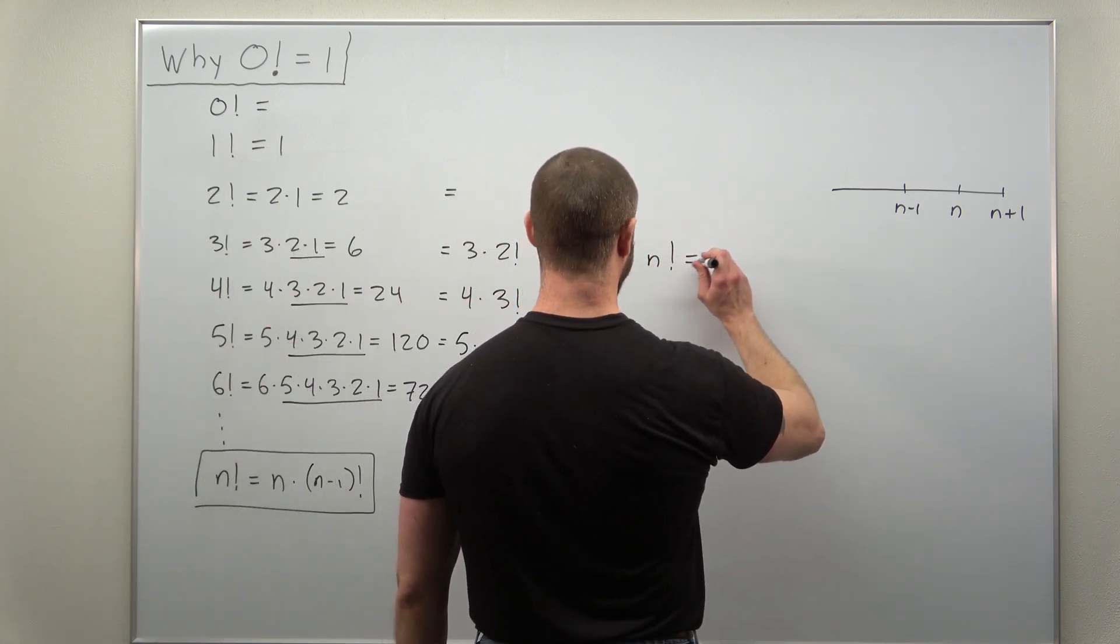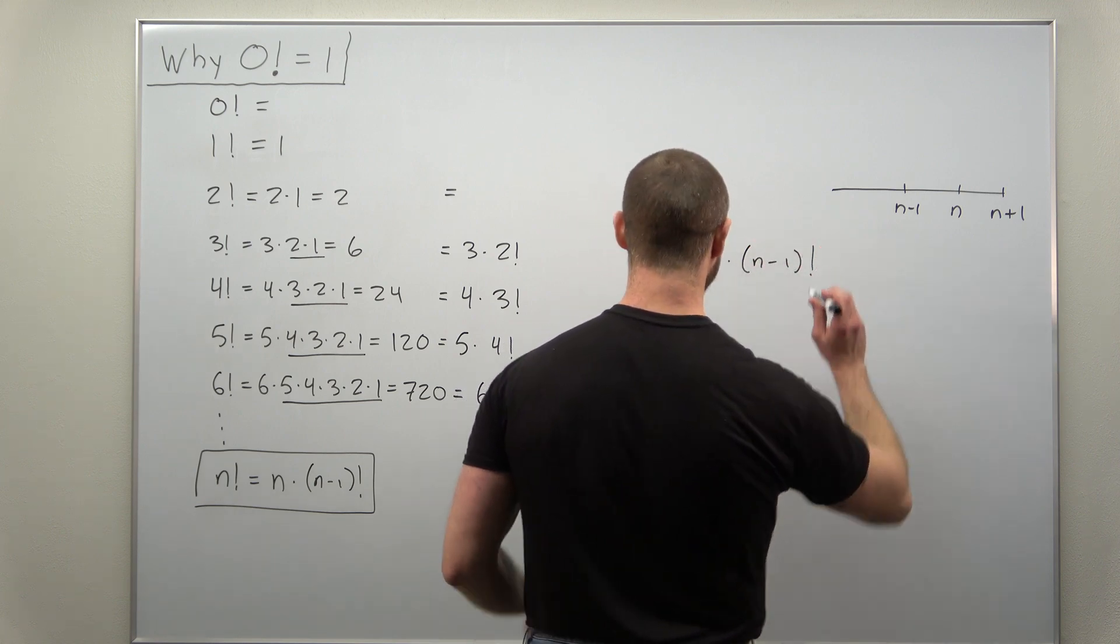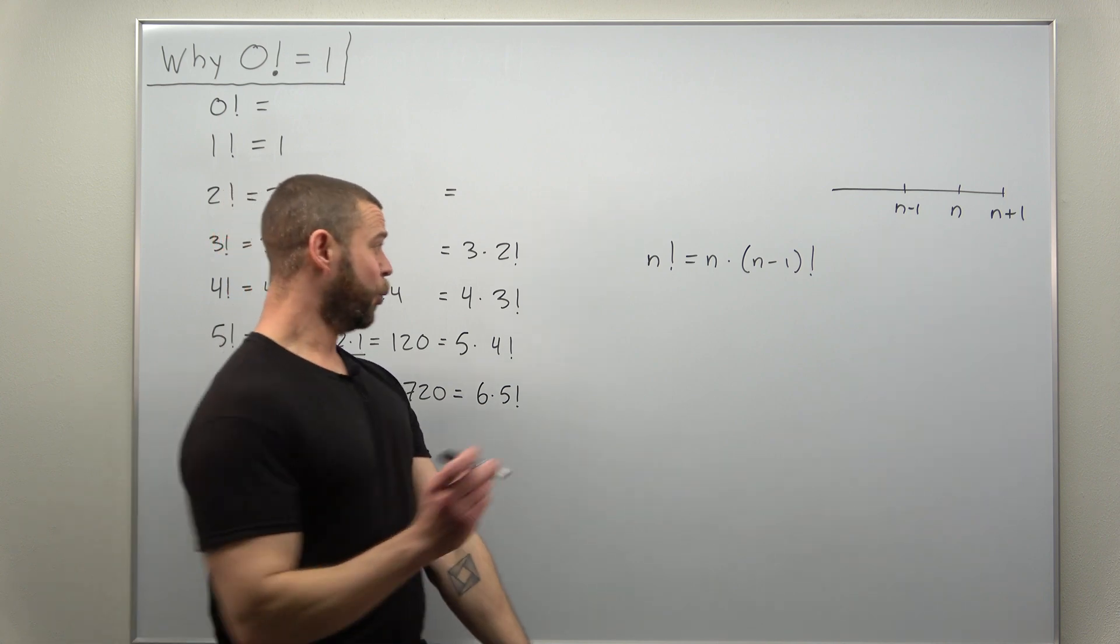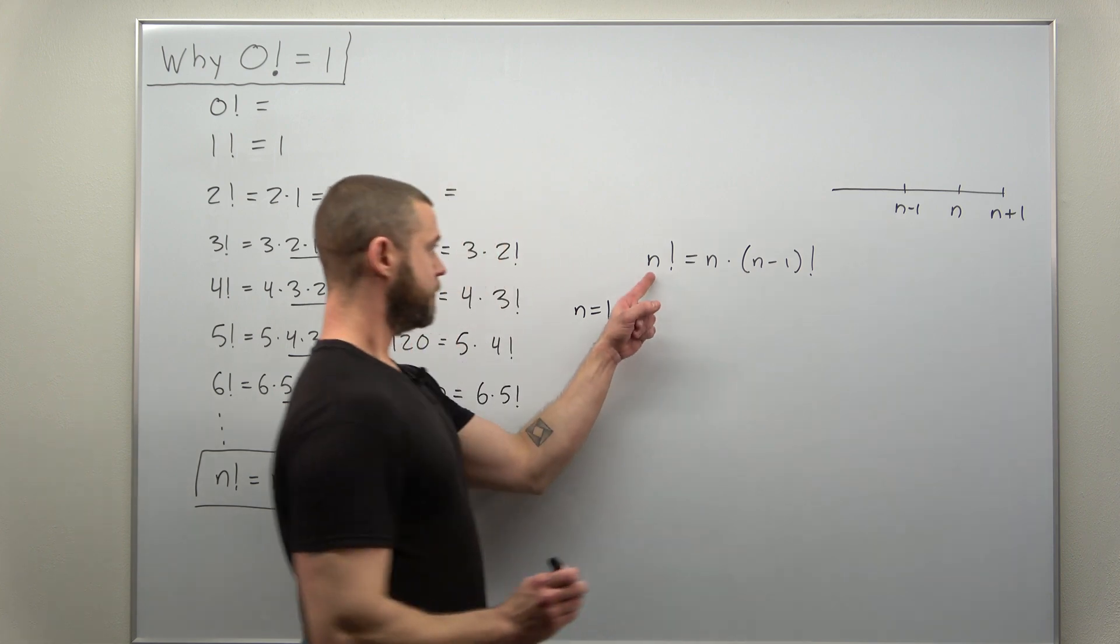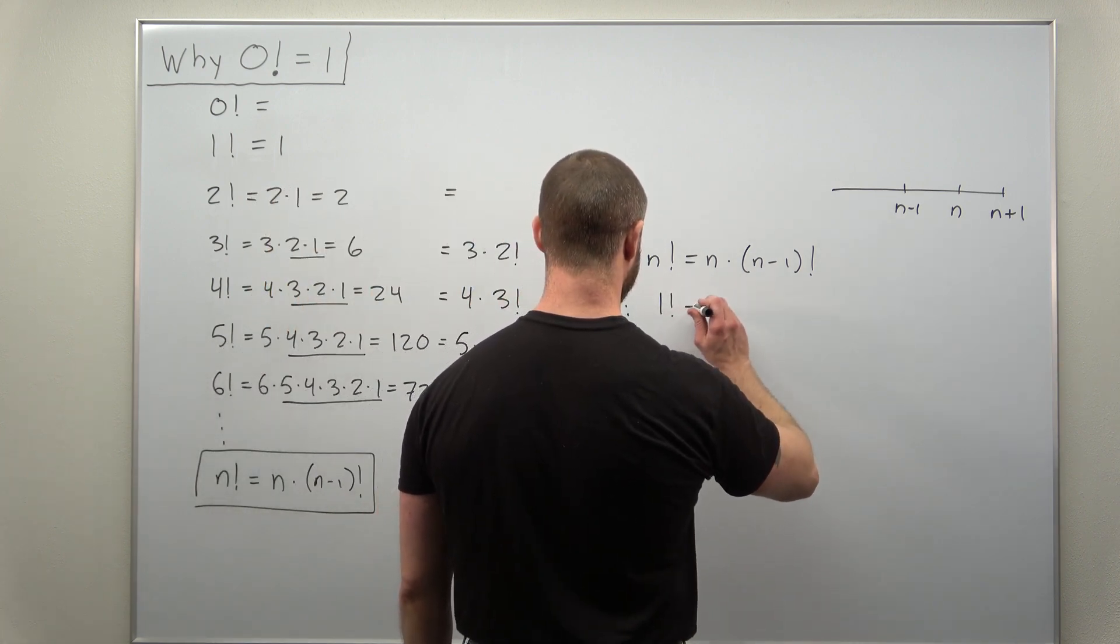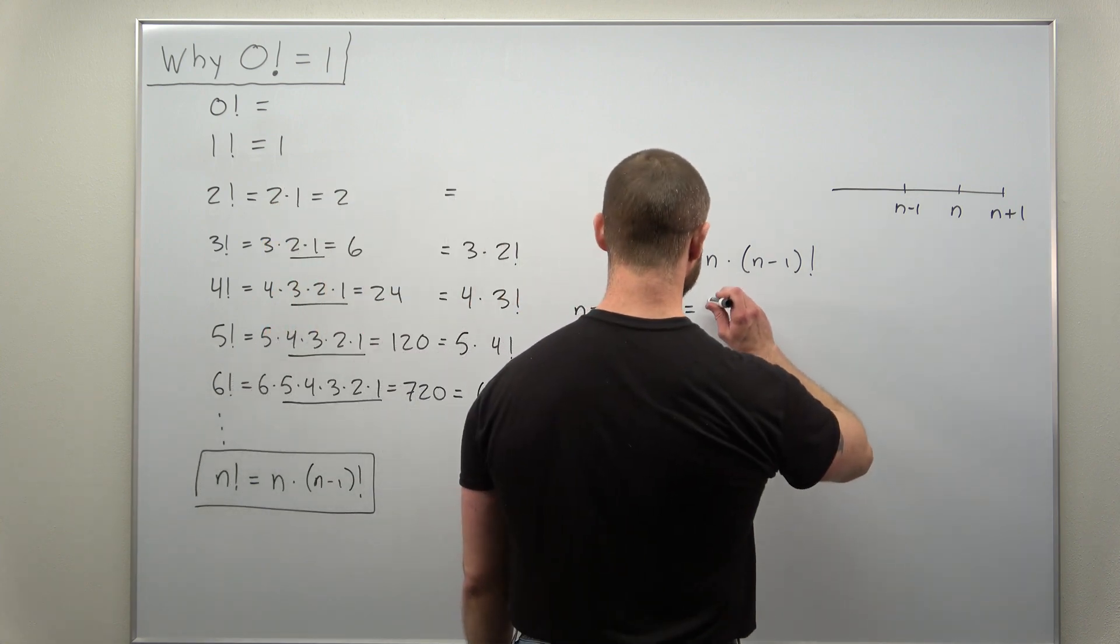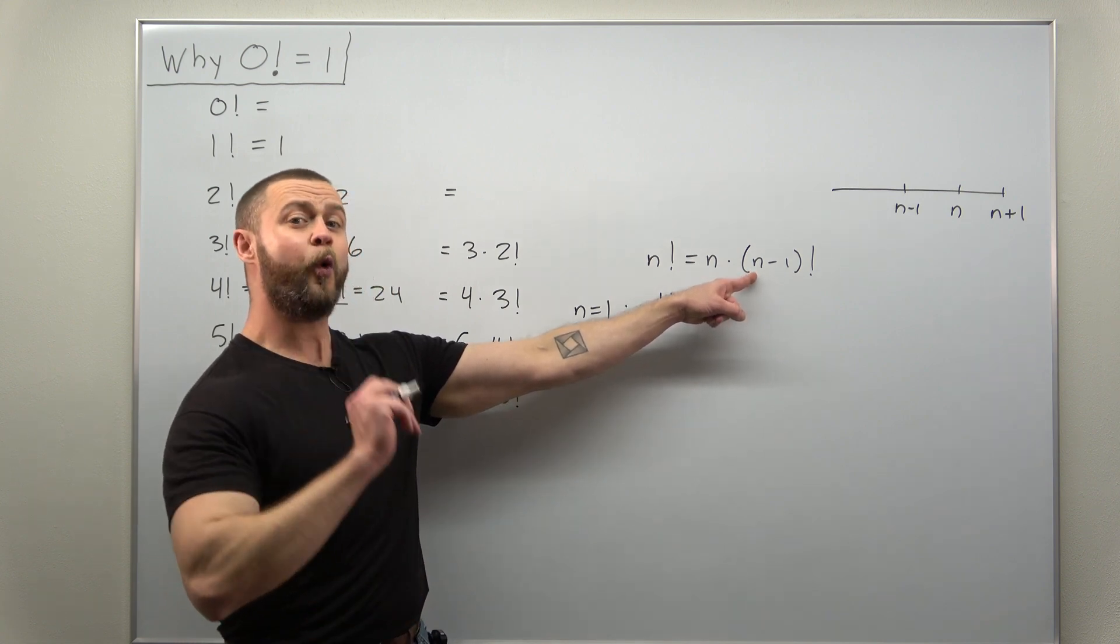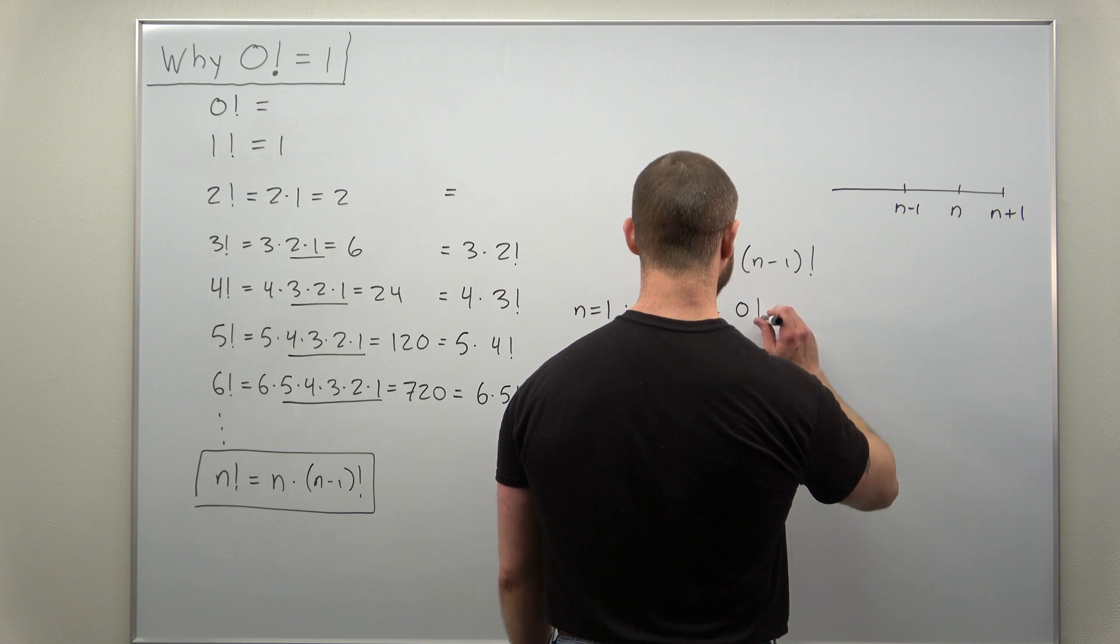n factorial equals n times n minus one factorial. Let's just go ahead and plug in n as one. On the left we're going to get one factorial. And on the right we have one. And notice inside the parentheses, one minus one - that is zero. So we get zero factorial.